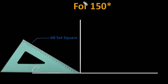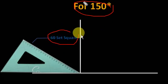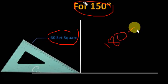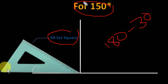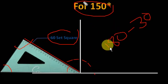Now let us construct an angle of 150 degrees. To construct an angle of 150 degrees, you have to choose the 60-degree set square. Here it is 90 degrees, 60 degrees, and this is 30 degrees. 180 minus 30 equals 150 degrees. You should draw a line here — this area is 150 degrees.